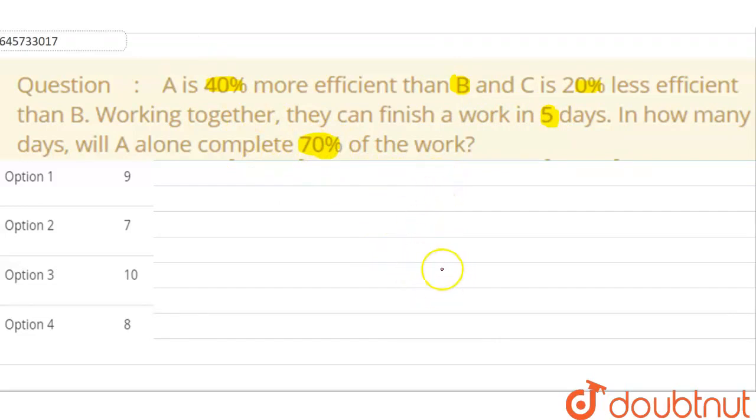Comparison of A is with B and C is with B. Let us suppose the efficiency of B is 100 units. So A will be how much? A is 40% more, so A will be 140. C is 20% less, so C will be 80.